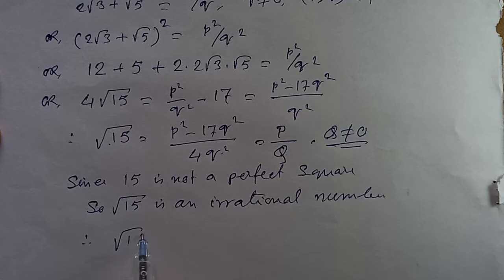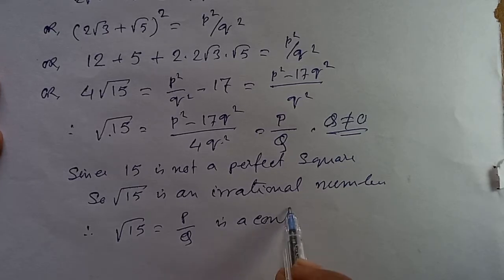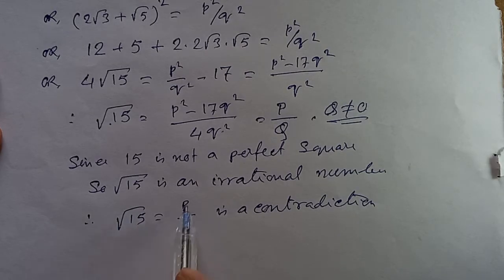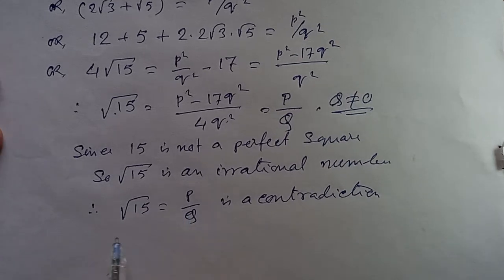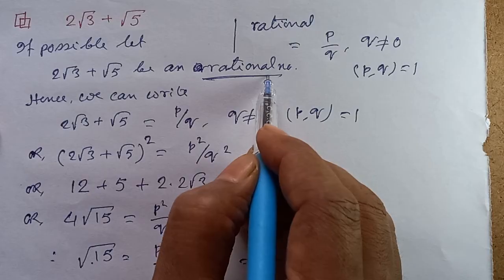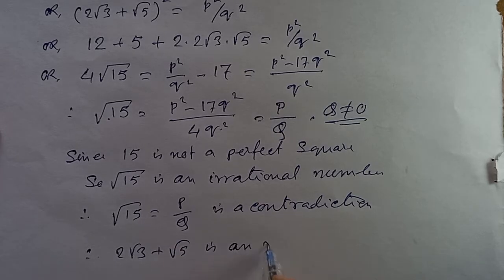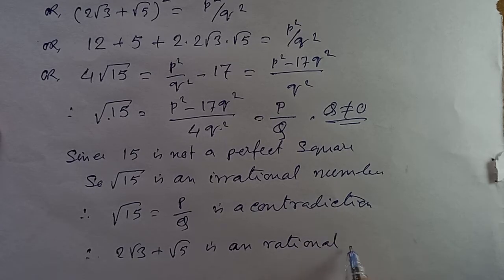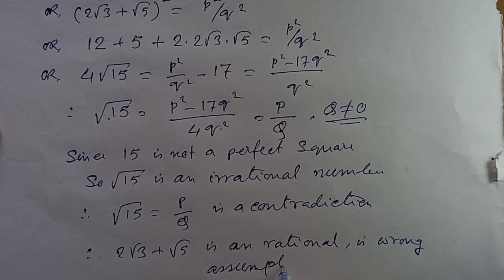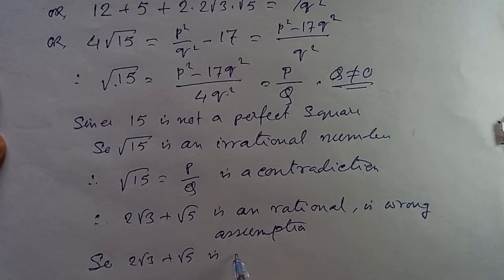But √15 is an irrational number, so √15 equaling p by q is impossible. This contradiction shows our assumption was wrong. Therefore 2√3 plus √5 is an irrational number.